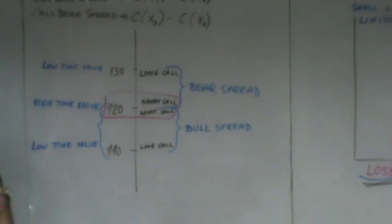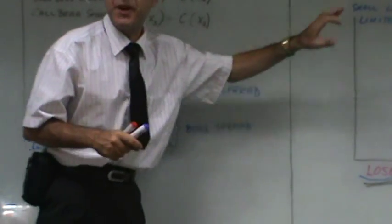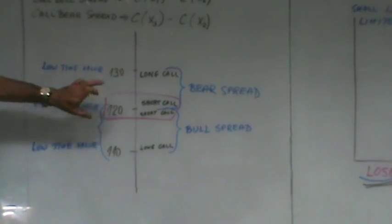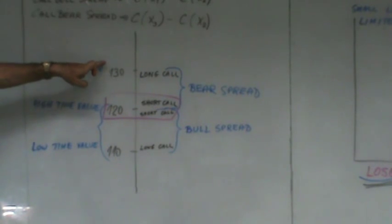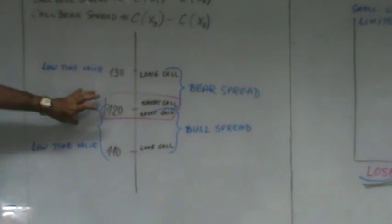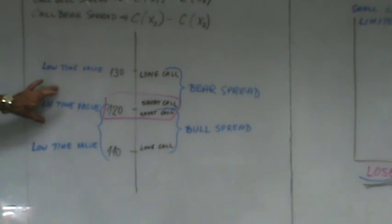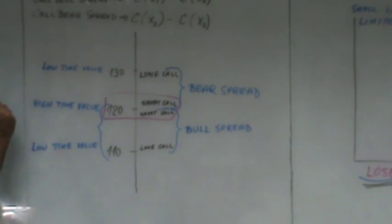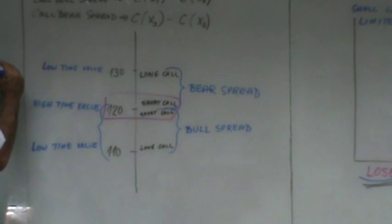Time value is highest near the strike price. So if we're near 120 and near the strike price, this has very high time value. The far in-the-money and far out-of-the-money options have low time value. So these two will have low time value and the middle one will have high time value. When you construct a butterfly spread, you're short the midpoint and long far out of the money and far in the money — you're collecting more time value.